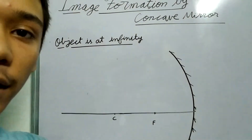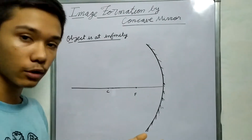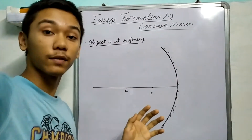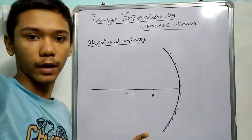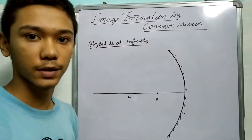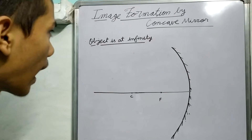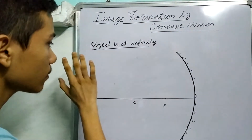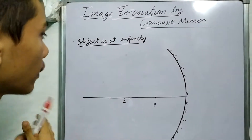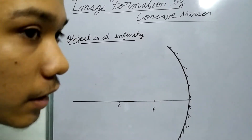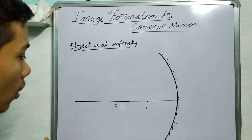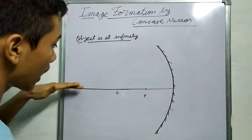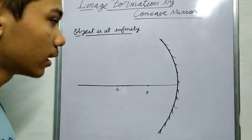By infinity I mean really, really far away. Say for example you have a concave mirror, a small concave mirror and you have the sun, really really far away — it's 150 million kilometers far away. The key thing is that if an object is at infinity or extremely far away, then all the rays will be very nearly parallel to the principal axis, so almost parallel rays.